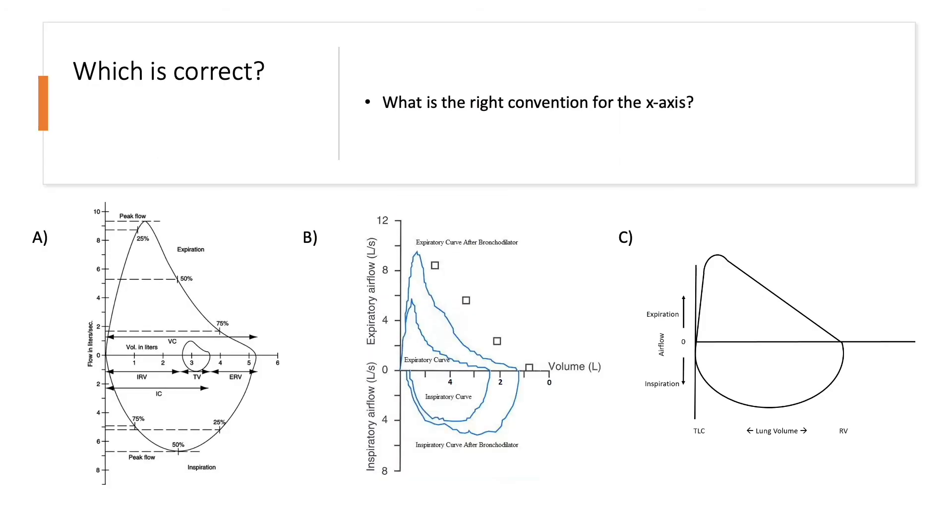So then the question becomes, what is the right convention for labeling the x-axis? Is it A with the zero point to the left of the graph? Or is it B with the zero point to the right of the graph? Or is it C with no x-axis labels at all? So as you can imagine, the answer is not simple. So let's take each scenario individually.